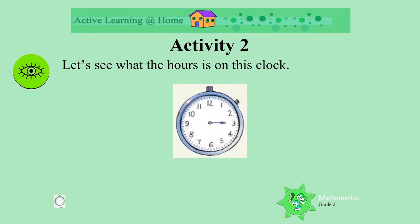Now let's take a look at this clock. Where is the hour hand pointing on this clock? The hour hand is pointing at the 3. So this tells us it is 3 o'clock.